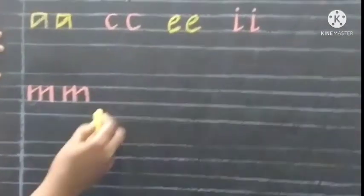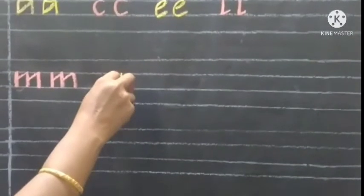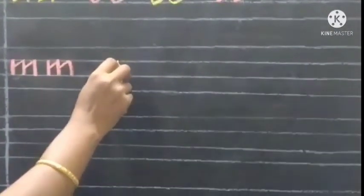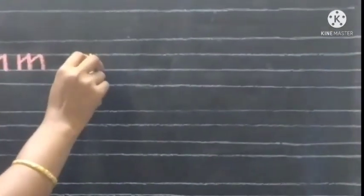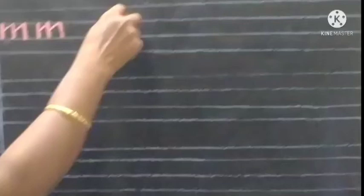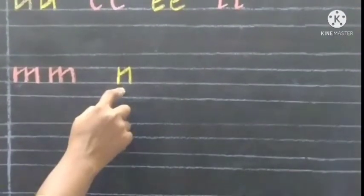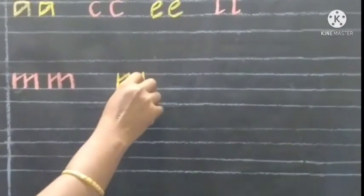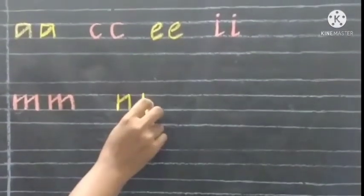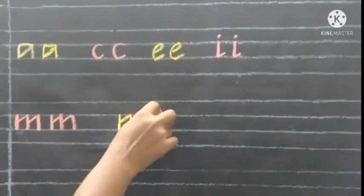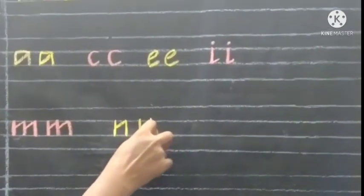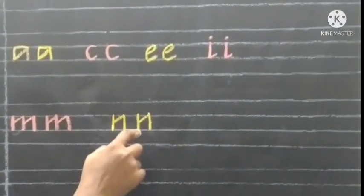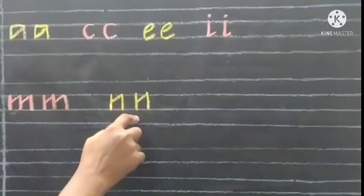Now we are going to write N. One standing line and a slanting line from the middle, and come down — makes N. Write once again: one standing line, a slanting line from the middle, and come down. Makes N.